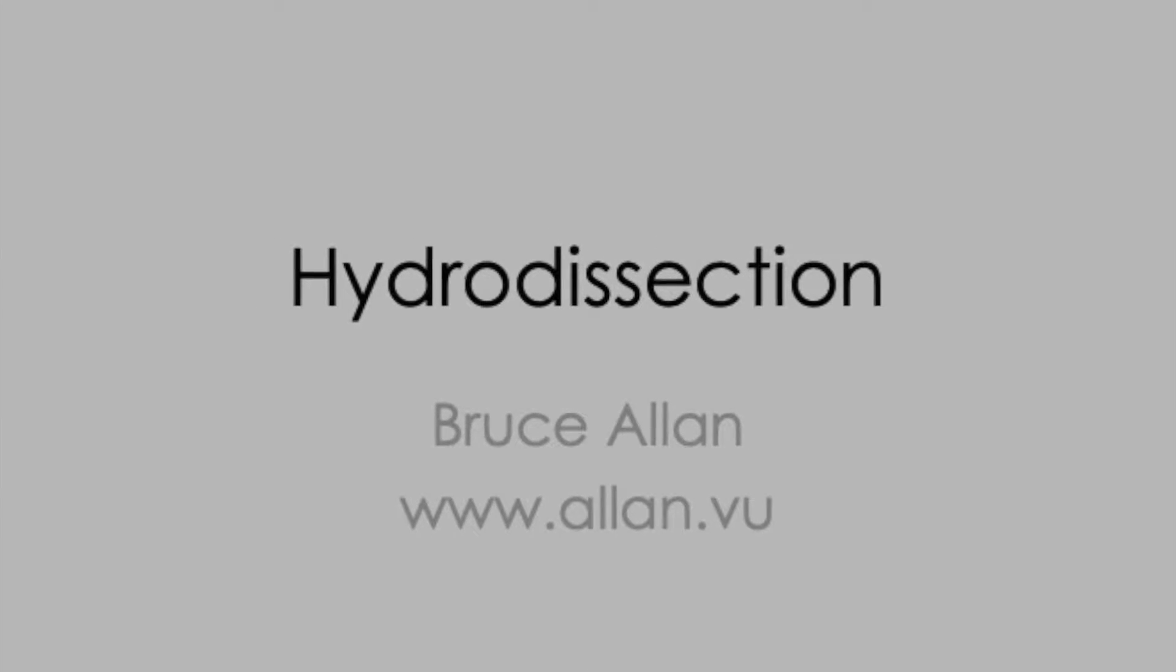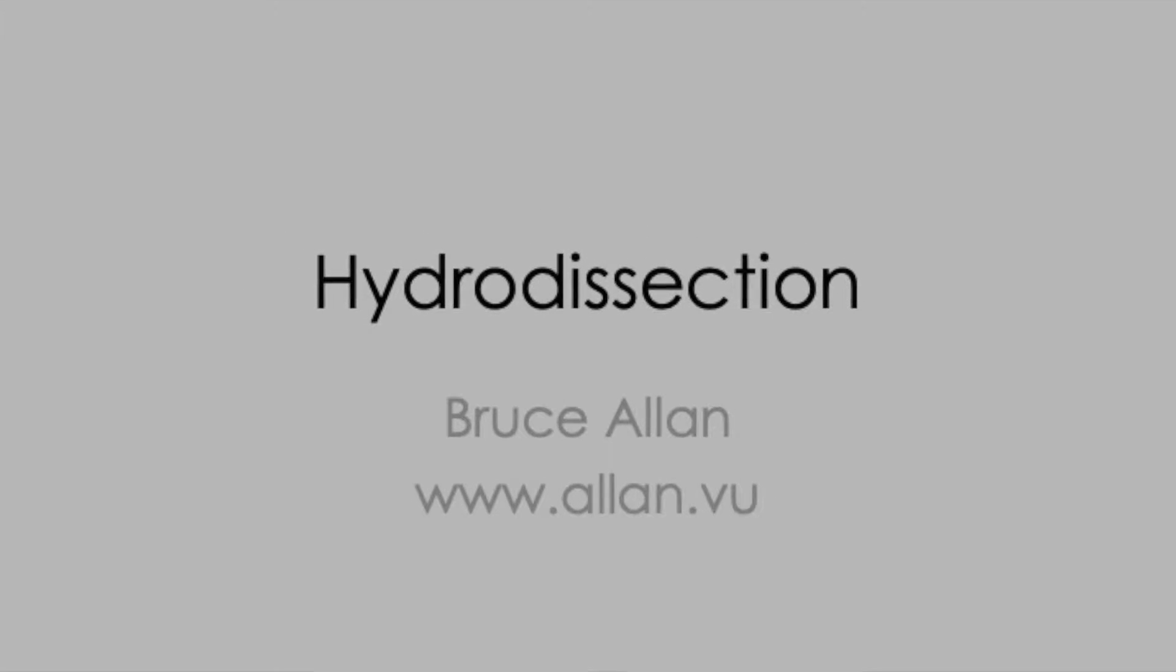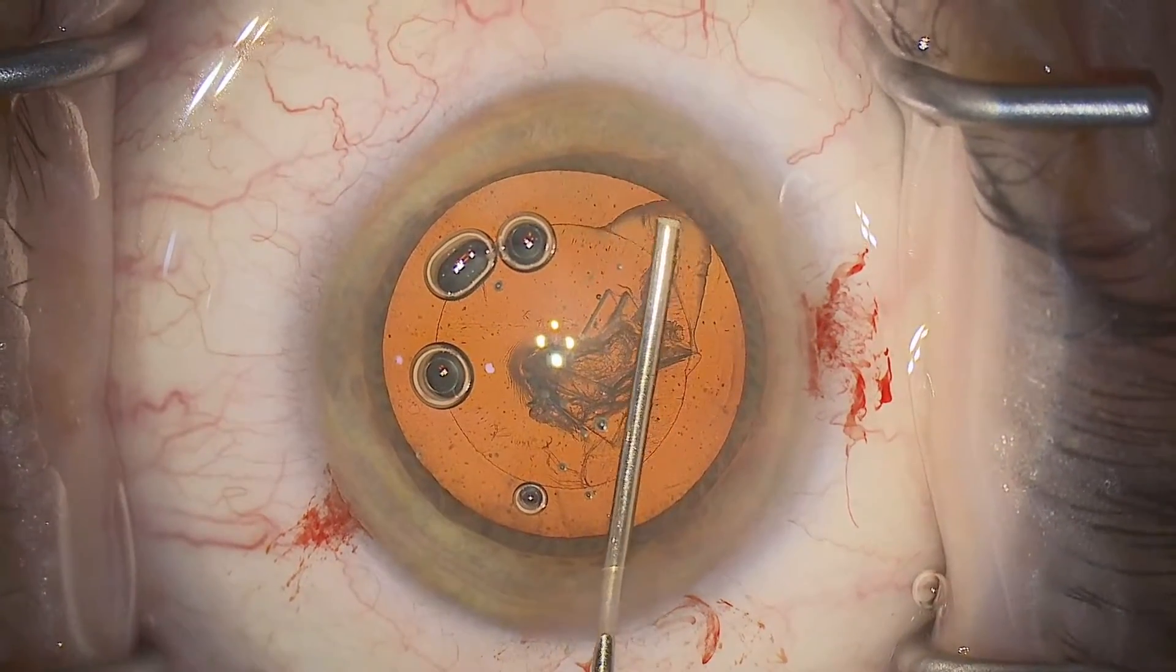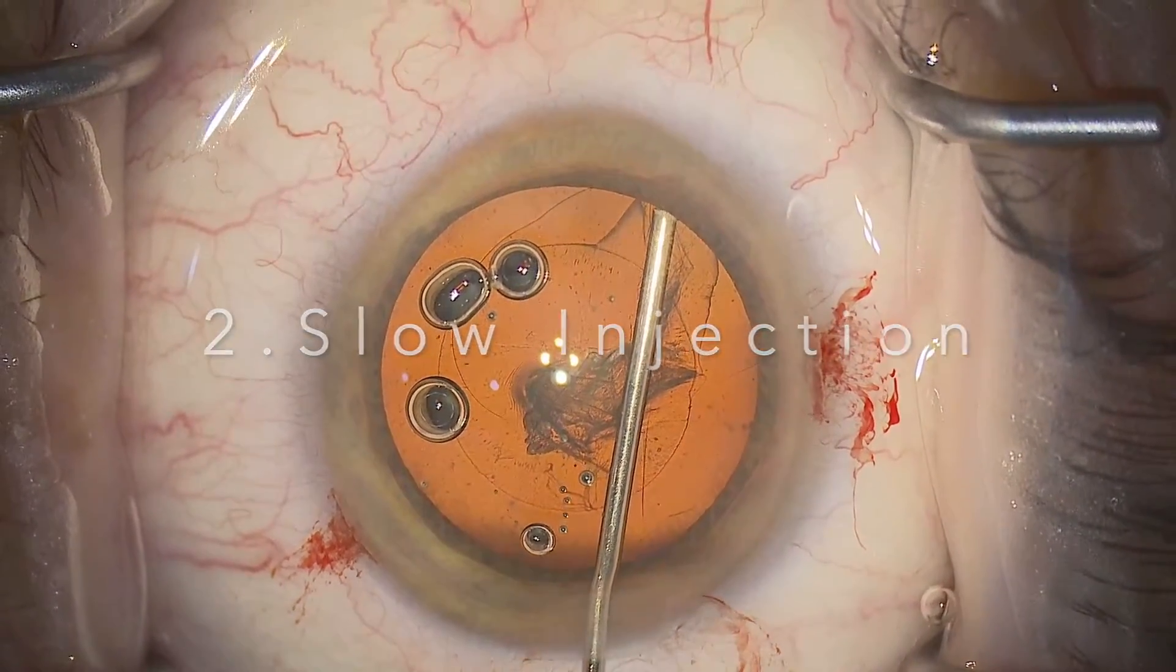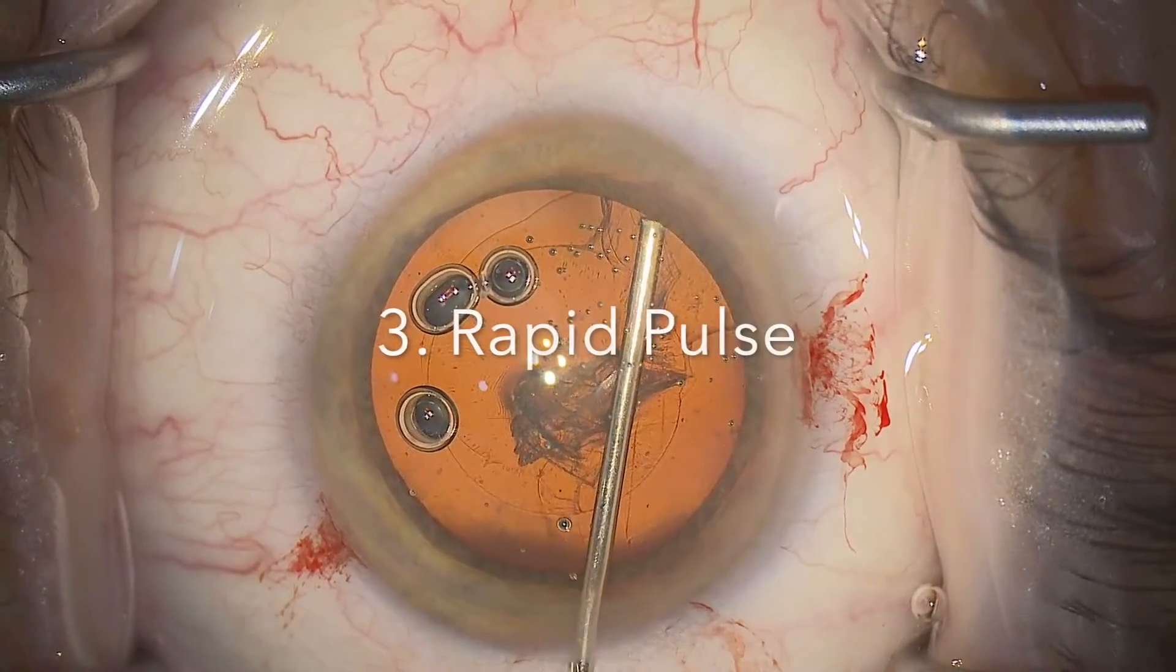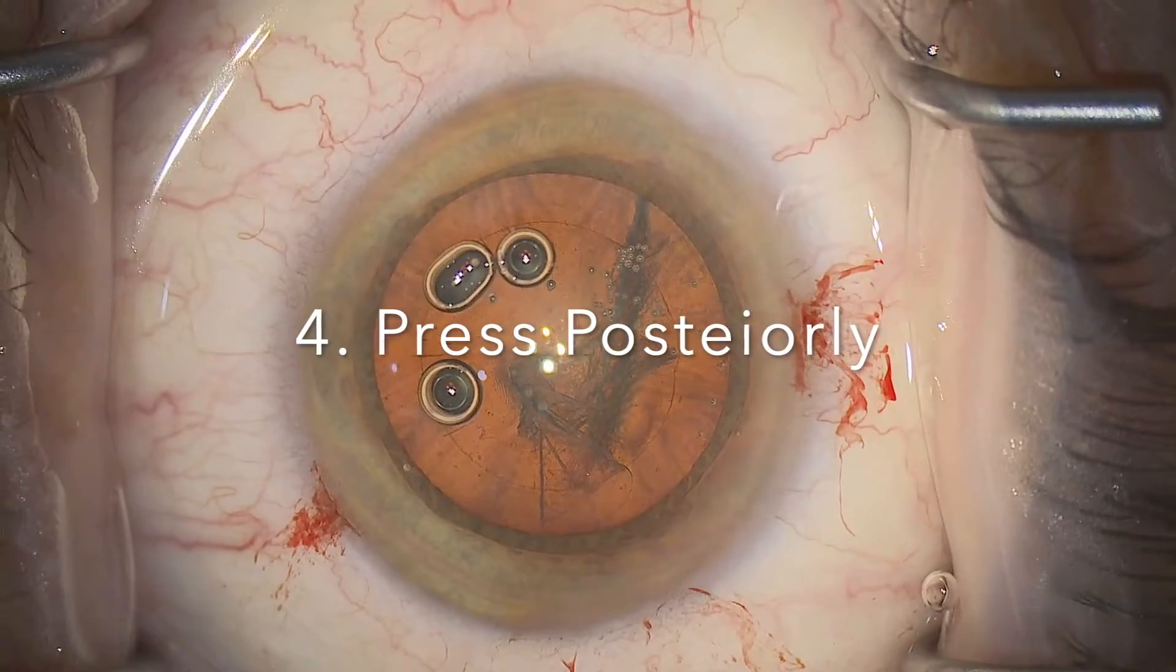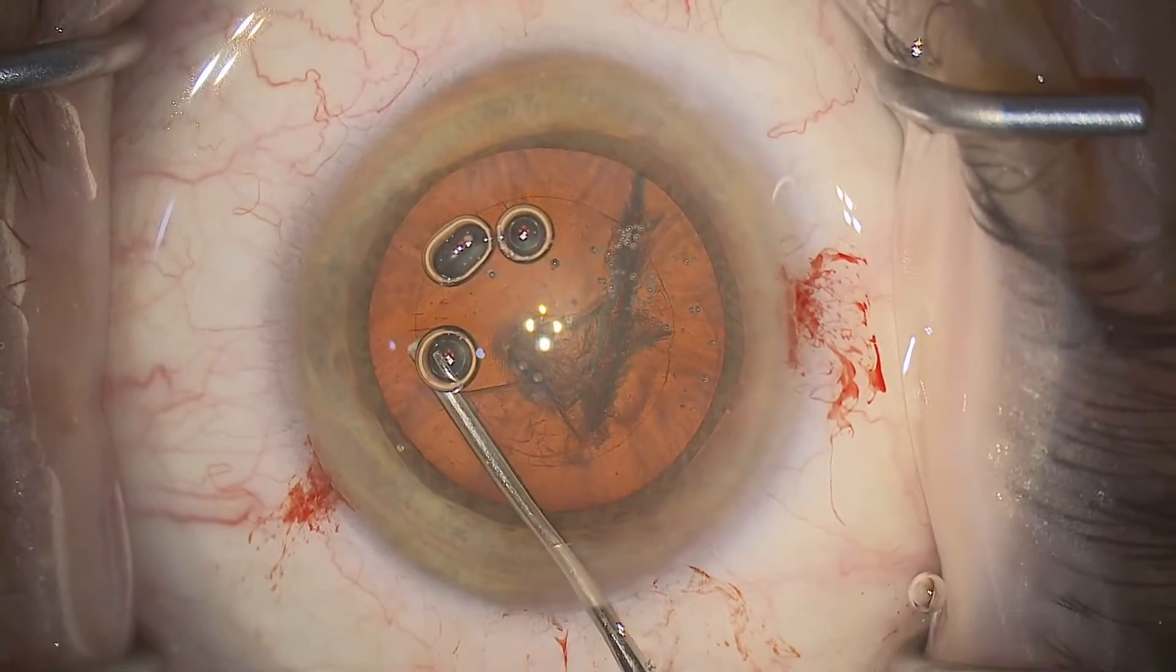Here we're going to talk about breaking hydrodissection down into four stages. These are: gentle lifting to establish a cortex cleaving hydrodissection plane, slow injection for free flow, rapid injection for the hydrodissection, and pressing down to neutralize the capsule block.